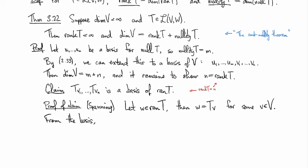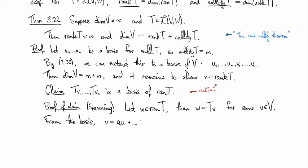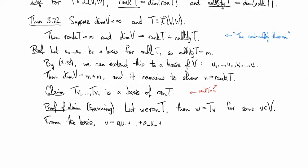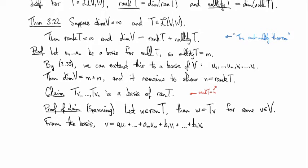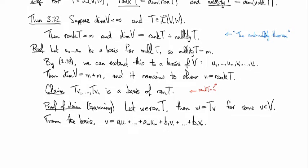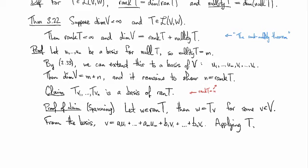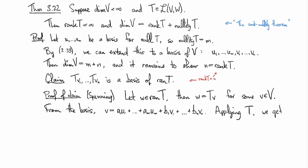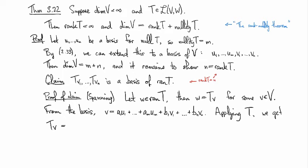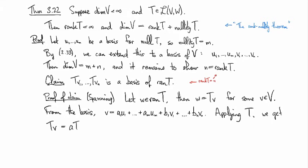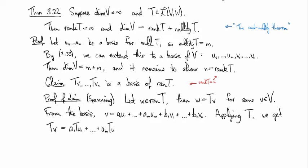From the basis we know that we can write v as a1u1 up through amum plus b1v1 and up through bnvn. And then applying T to both sides, we get Tv equals, and then on the left side we're going to have a1Tu1, so I'm using linearity here, up through amTum.